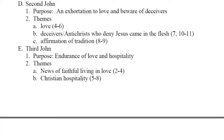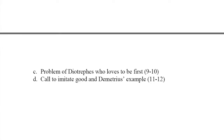3 John is addressed to Gaius. The purpose is the endurance of love and hospitality. The themes include news of faithful living and love, Christian hospitality, the problem of Diotrephes who loves to be first, and a call to imitate good — with Demetrius as an example.